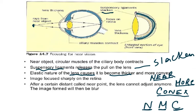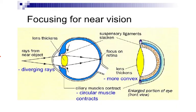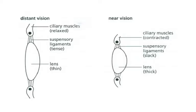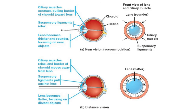A quick recap of near vision: divergent rays require a more convex lens. For a simple comparison — lens thick versus lens thin; suspensory ligaments slack versus tense; ciliary muscles contracted versus relaxed. Another diagram explains this further: ciliary muscles contract, pulling the border of the choroid towards the lens, and suspensory ligaments relax. Pause here to review these diagrams and make your notes.